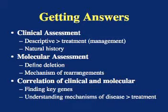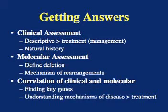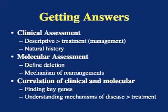The second aspect of getting answers is the molecular assessment — the information that we've discussed in the previous podcast. This assessment allows us to obtain a very well-defined understanding of where the actual genetic defect is. Over time, that will help us understand what are the likely consequences of a particular genetic defect. And finally, by correlating the clinical features and the molecular features, we will be able to identify which genes are most important — that critical 8 or 10 genes that are responsible for the majority of the phenotypic features. And once we know those genes, we can begin to identify what treatments could conceivably be beneficial.